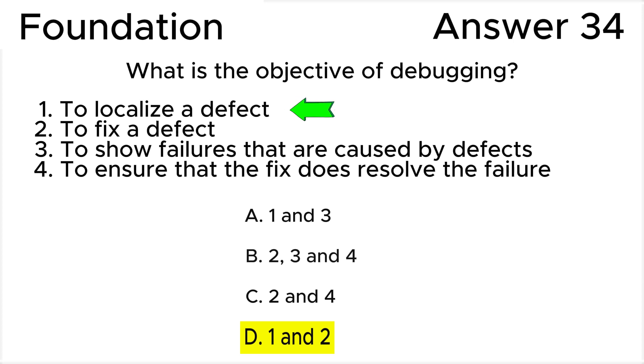Let's take a closer look at all the statements from 1 to 4 to find objective of debugging. Statement 1 is valid because localizing a defect is a valid debugging objective. Statement 2 is valid because fixing a defect is a valid debugging objective.